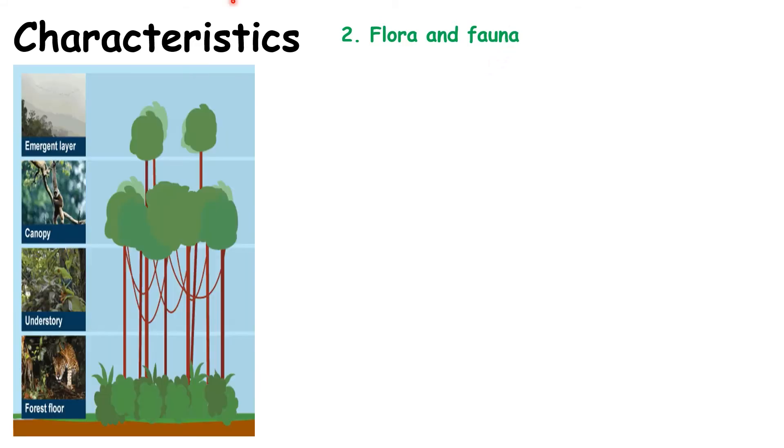Next, we're going to look at animals and plants within the rainforest. Flora — if you think of Flora margarine, that comes from plant oils — so you can remember that flora is plants and fauna are our animals. In the rainforest, you have four different layers through the trees.